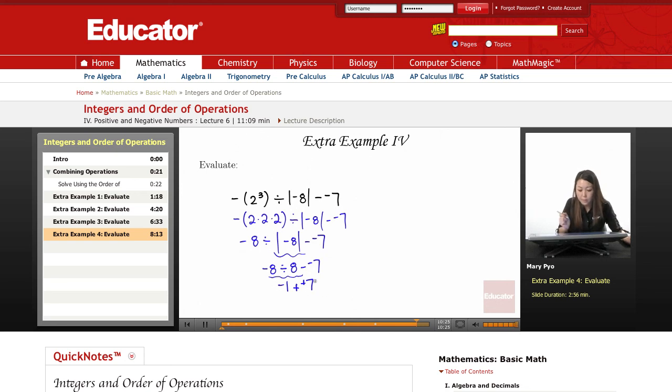Again, I have different signs, so I'm going to find the difference of their absolute values. The absolute value of negative 1 is 1. Absolute value of 7 is 7. That's 6. And then I'm going to give it the sign of a 7. And that is it. That's your answer.